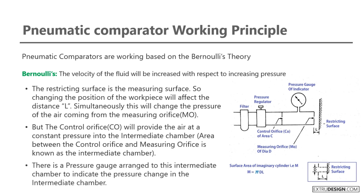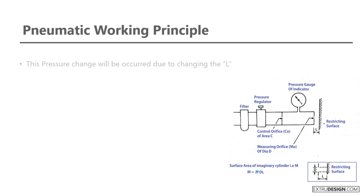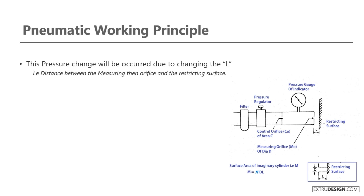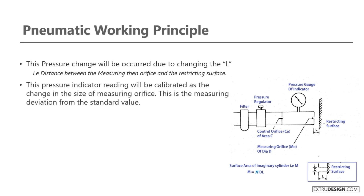A pressure gauge is arranged at the intermediate chamber to indicate the pressure change within it. This pressure change occurs due to changing the distance L — that is, the distance between the measuring orifice and the restricting surface. The pressure indicator reading is calibrated as the change in the size of the measuring orifice, representing the deviation from the standard value. This is how the pneumatic comparator works.